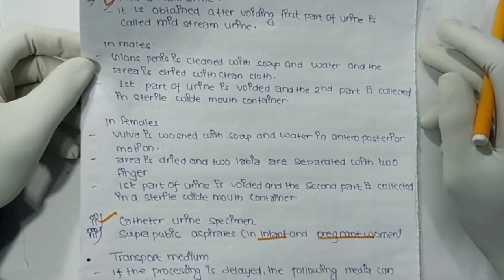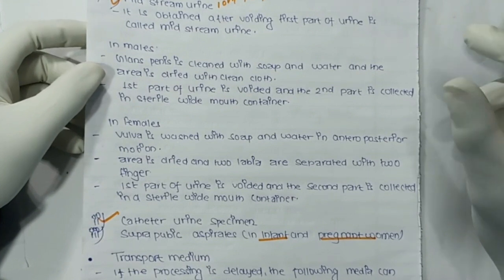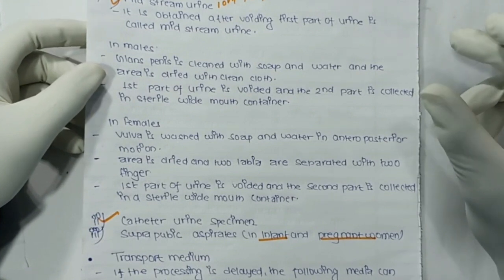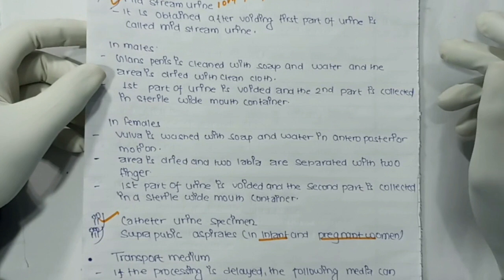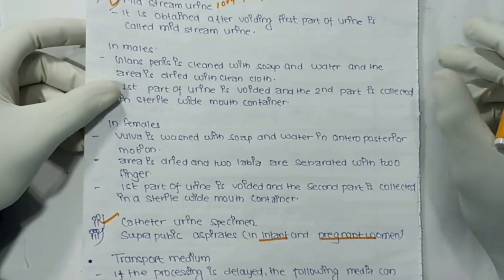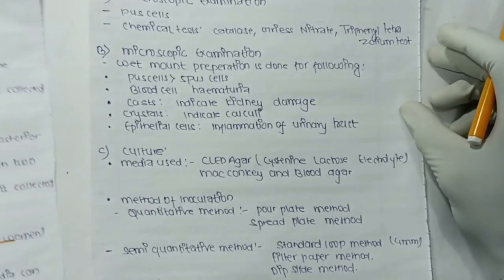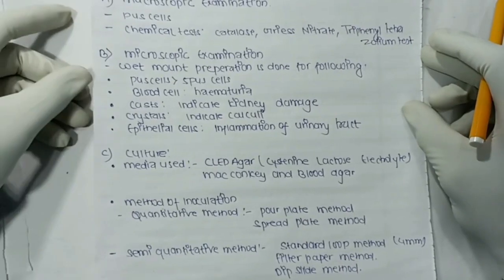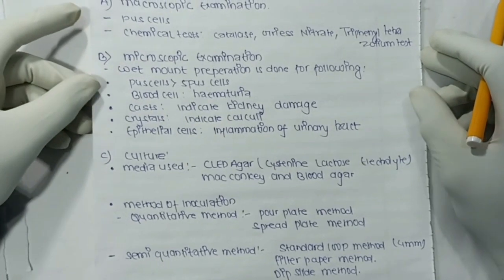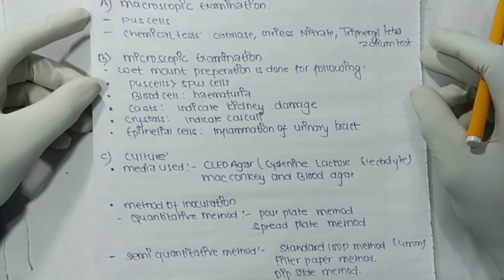After collection of the specimen, we need to transport it. If processing is delayed, the following transport medium can be used: 1.8% boric acid and sodium chloride. Processing includes macroscopic examination and microscopic examination.